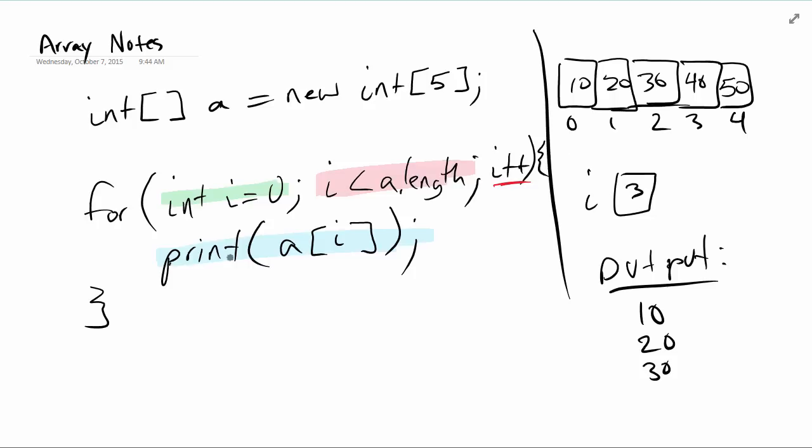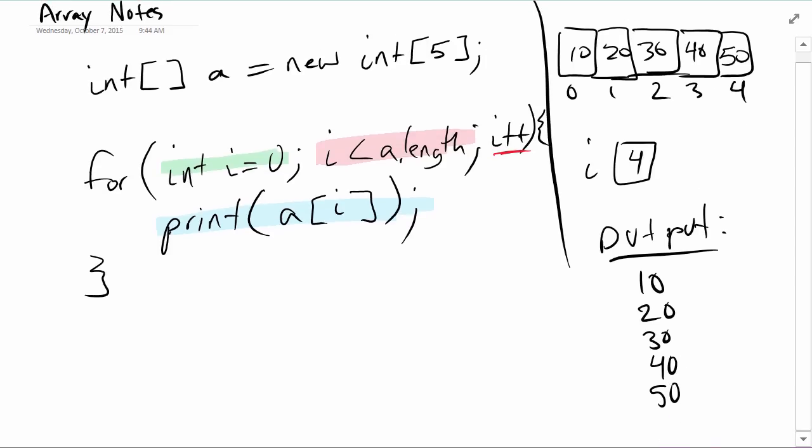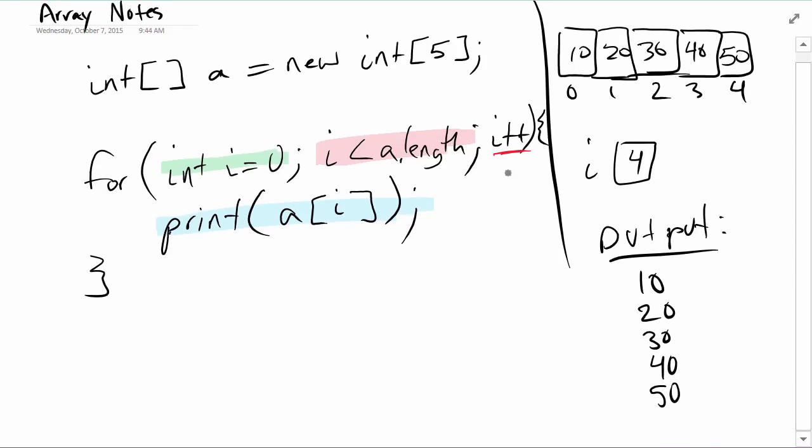Three less than five, true. Print a[3], that's 40. We come back around one more time, we increment i to be 4. Is four less than five? That's true. We print a[4], that's 50.